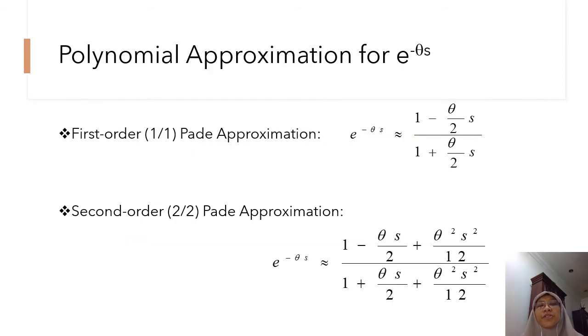This is the polynomial approximation for the time delay transfer function. Why do we need this polynomial approximation? Well, in some analysis, especially for the stability analysis, the equation must be in polynomial form. So we cannot have any exponents in the equation. This is why this exponent with the time delay has to be changed to polynomial form. To do this, you can use either the first order or the second order Padé approximation, which is shown here. It is up to you which one you want to use, but of course, the second order approximation is more accurate. However, mathematically, it becomes slightly more complicated.